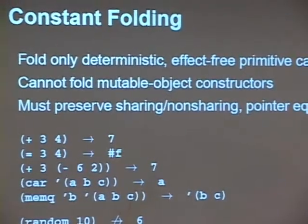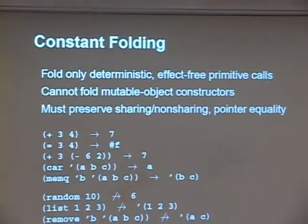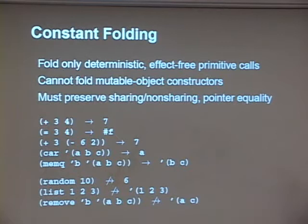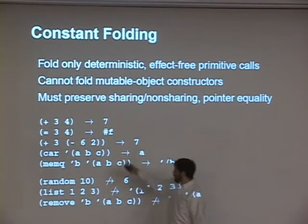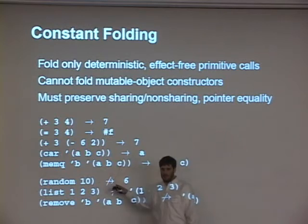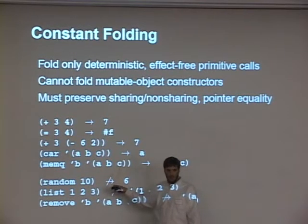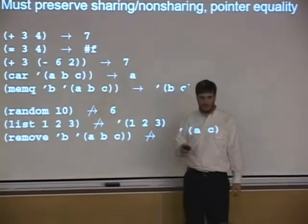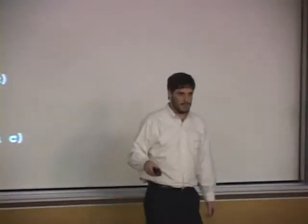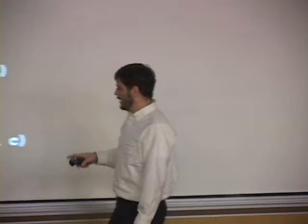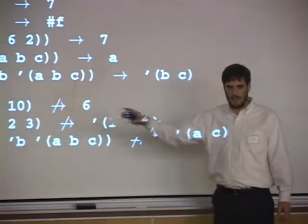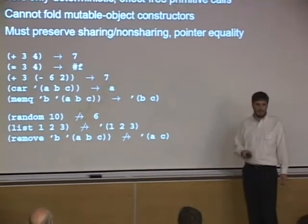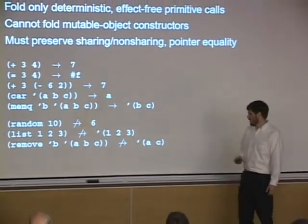With guaranteed optimization, a macro programmer can count on a certain set of optimizations being performed: constant folding, copy propagation, procedure inlining, dead and useless code elimination, and a few ad hoc degenerate case optimizations. Constant folding basically means we fold primitive calls. There are some we can fold and some we can't. We can fold things like arithmetic, but we can't fold random — that would be disappointing in your game. You can't fold list of 1, 2, 3 into quote (1 2 3), and this hurts. It's unfortunate — but you can't do it because some caller may be side-effecting the result of this call, expecting it to be a new list each time.